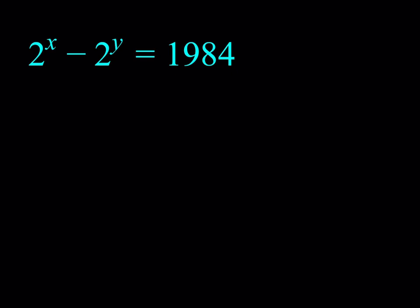Alright, let's get started. Now, we do have this equation 2 to the power x minus 2 to the power y equals 1984. Now, I know that some of you might be guessing the answer here and try to find it by guess and check, but that's not the point. The point is what method we're going to use to solve for x and y.